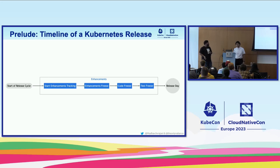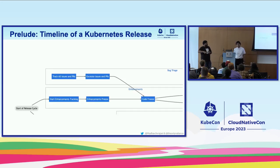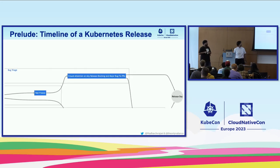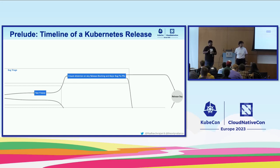We also have test freeze — after committing code, if someone has missed any tests or needs to make CI more reliable, we can add tests. Although if there are burning issues, we don't follow the freeze because we want our product to be reliable. The bug triage team tracks all issues and PRs in the kubernetes/kubernetes repo across time, and escalates issues if they feel they should be taken care of urgently.